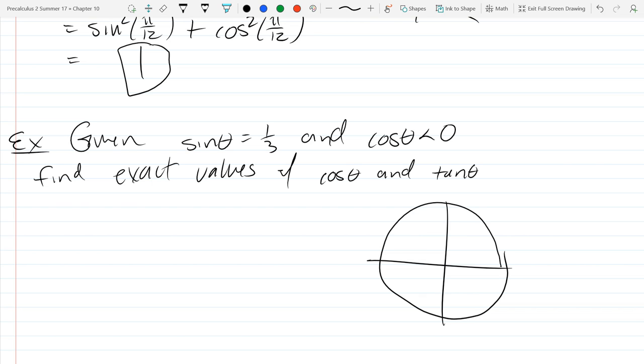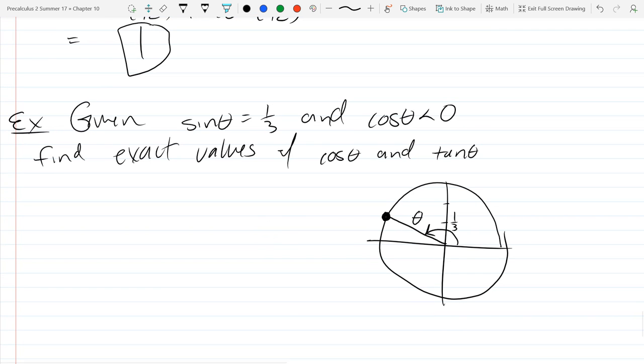So we're in quadrant two, our y value is one third, so that's about one third right there. So the point on the unit circle in quadrant two with y value one third is going to be right about here. Unfortunately, I don't really know what value theta has. However, this question is not asking for theta, it's asking what is cosine theta and tangent theta. So I don't know the x coordinate, but I do know the y coordinate is one third.